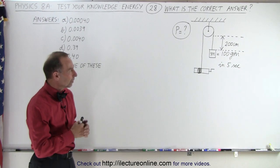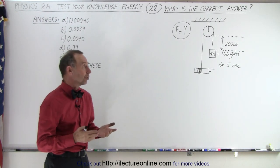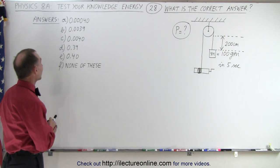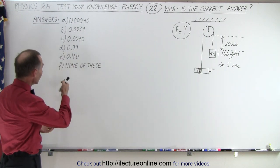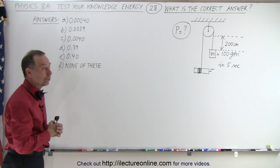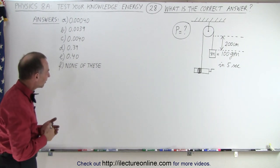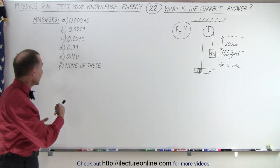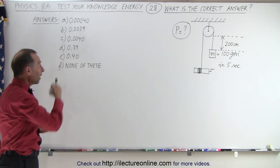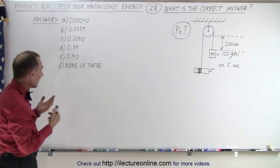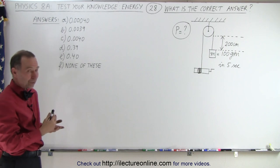Welcome to I Lecture Online. In this example we're given a number of answers, in this case six possible answers with various numbers and the last answer being none of these. That's always a problem because if the answer comes out to be something different than the possible answers given, you tend to be hesitant to say none of these because perhaps you made a mistake.